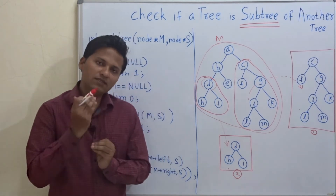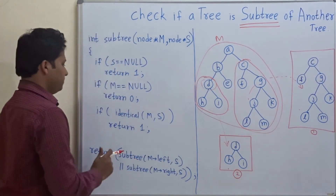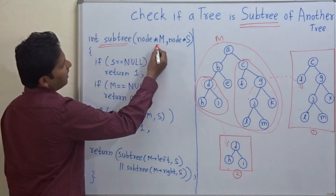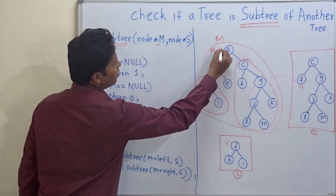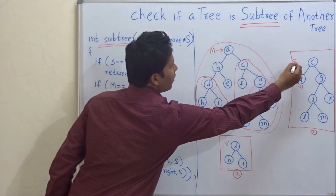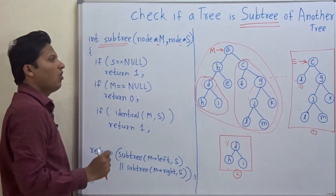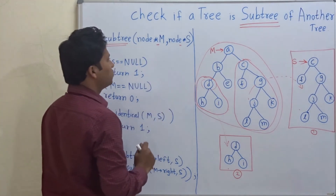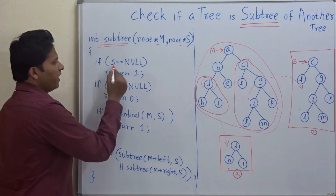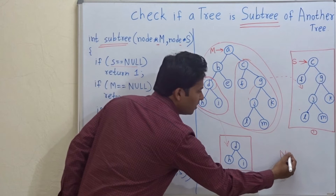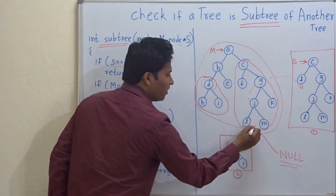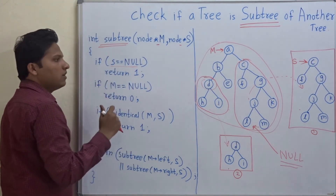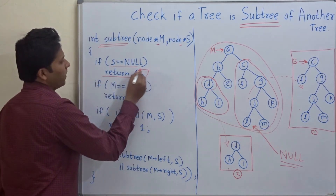So this is how we check if a tree is a subtree of another tree. Now let us see the program. The name of the function is subtree and the parameters are M and S. M is the pointer pointing to the root of the main tree and S is the pointer pointing to the root of the subtree we want to check. Now, if S equals null, a null tree is always a subtree of any tree, so we return 1.